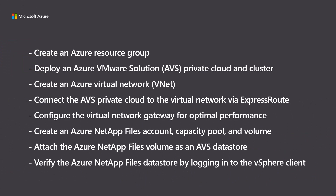Here are the high-level steps we'll be covering in this video: Create an Azure resource group. Deploy an Azure VMware Solution private cloud and cluster. Create an Azure virtual network. Connect the AVS private cloud to the virtual network via ExpressRoute. Configure the virtual network gateway for optimal performance. Create an Azure NetApp Files account, capacity pool, and volume. Attach the Azure NetApp Files volume as an AVS data store. Verify the Azure NetApp Files data store by logging into the vSphere client.